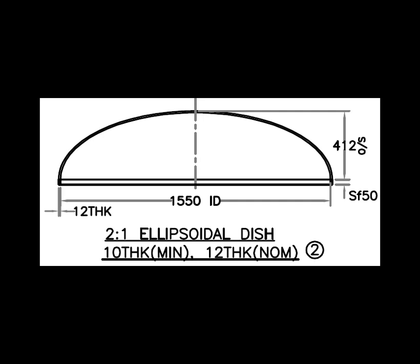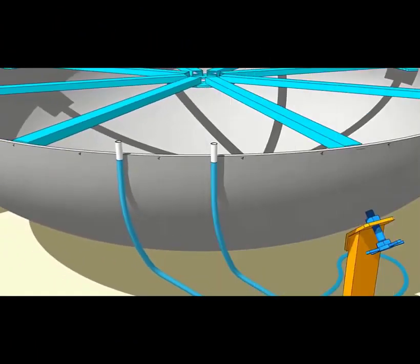Read the drawing for the height of the dish end. Use a flexible, transparent tube filled with water to transfer the level around the dish end.